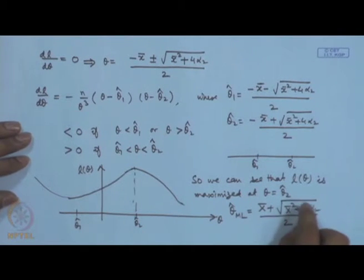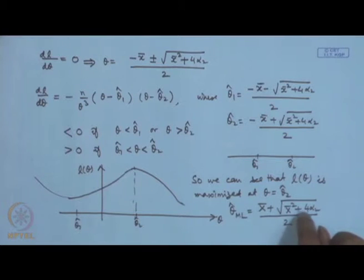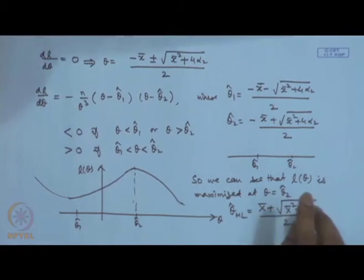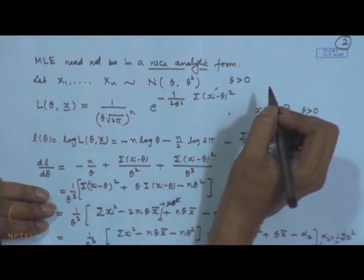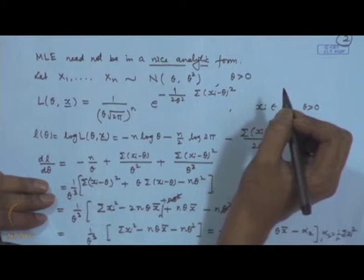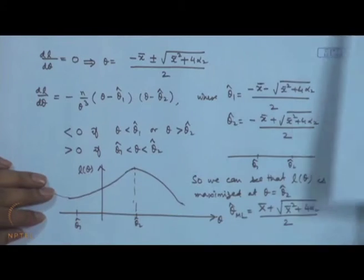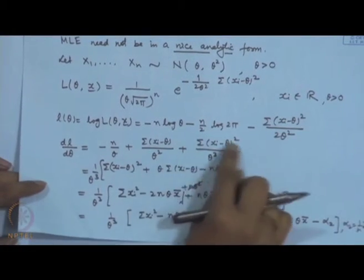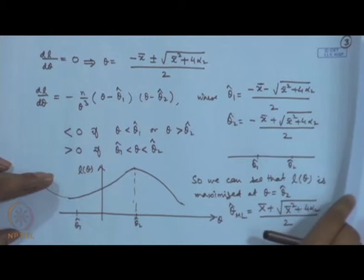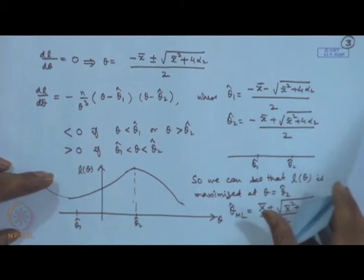You can see that the form of the maximum likelihood estimator is not in a nice analytic form — in fact, we are getting a square root. Checking properties like unbiasedness will be quite complicated. So the statement is confirmed: the MLE need not be in a nice analytic form. We may have an even more difficult situation where we are not able to solve the likelihood equation at all.